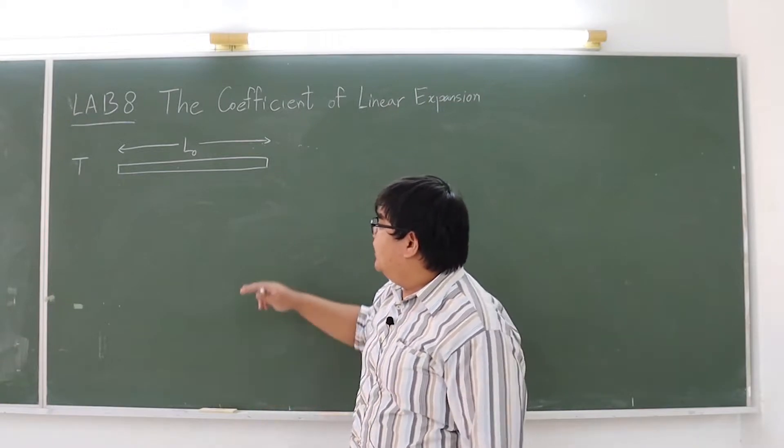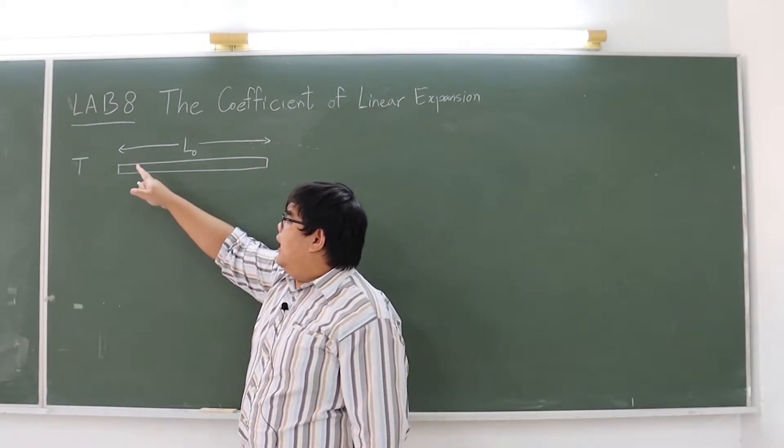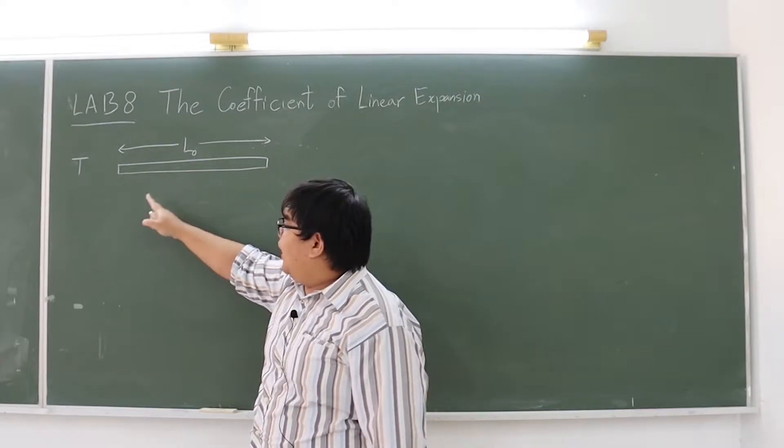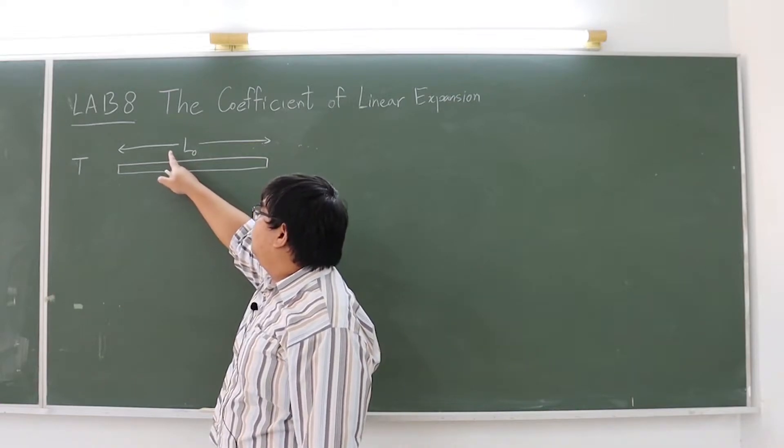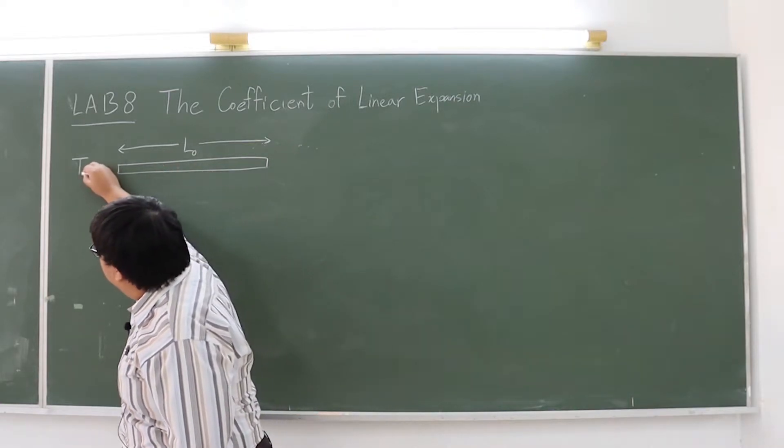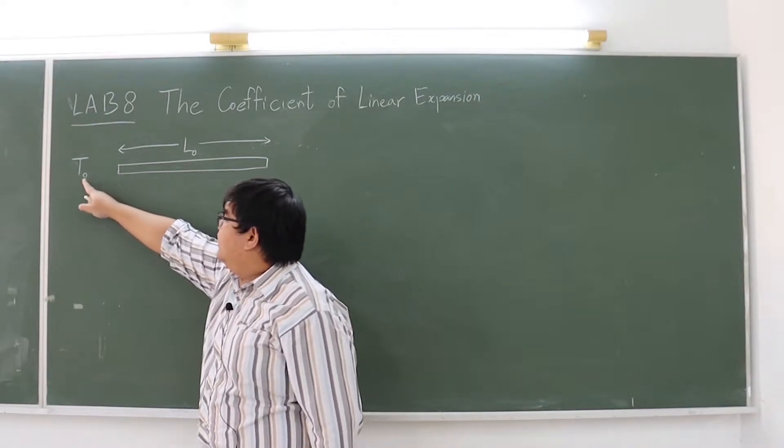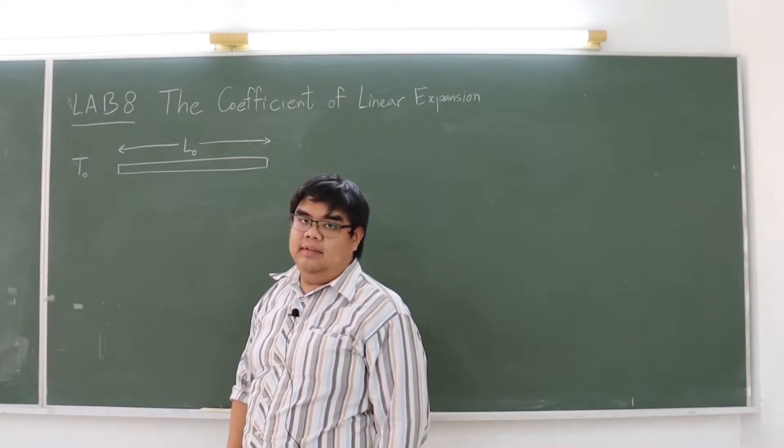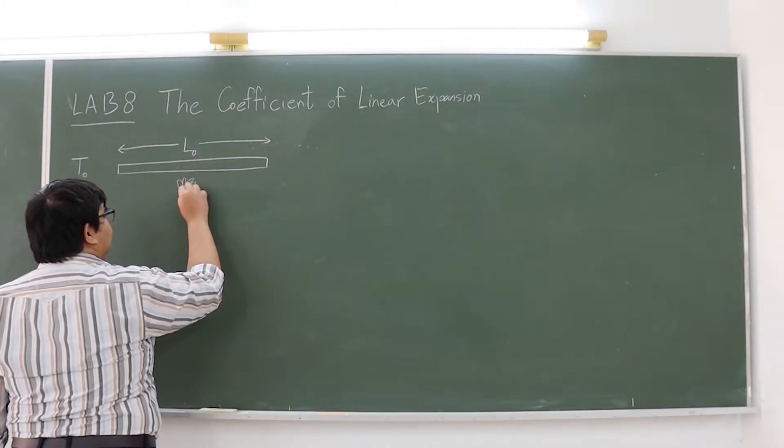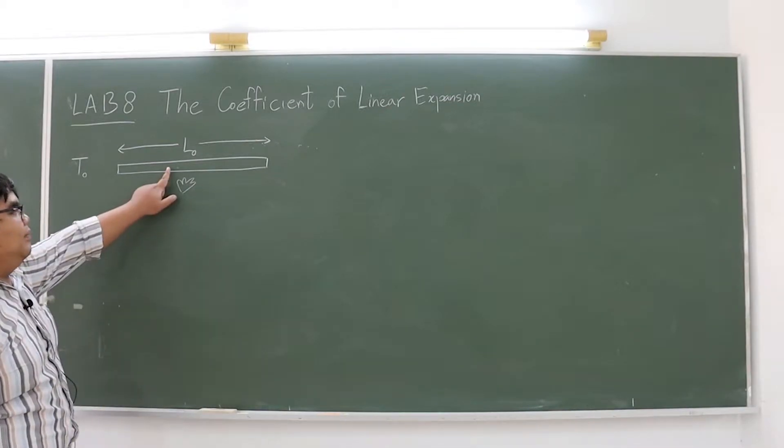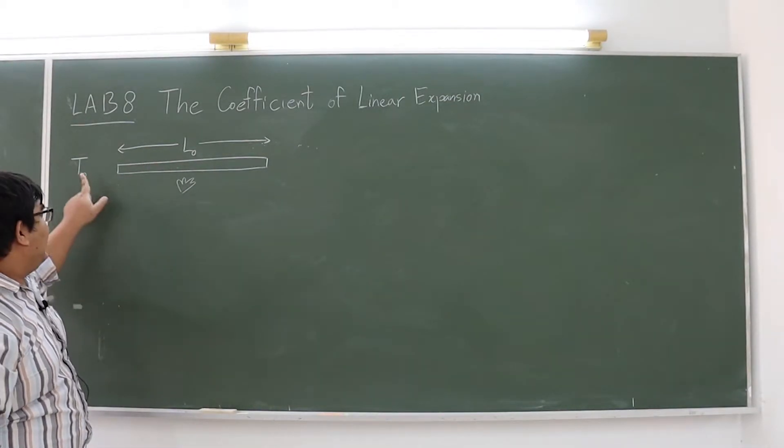For example, if we have a metal stick and it has temperature T0. At this temperature, the metal stick has length L0. After that, we burn it. I want to change the temperature from T0 to T.